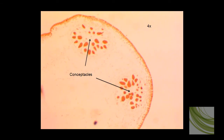Here is the first slide of Fucus using the 4X objective. We can see these concepticles, which are female concepticles. As we get a little higher magnification, we'll be able to see several other structures inside.